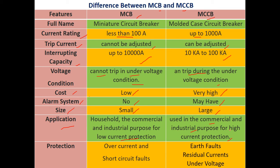In terms of protection, MCB protects against overcurrent and short circuit faults. MCCB also provides protection against overcurrent and short circuit; however, we prefer MCCB because it additionally protects against earth faults, residual currents, and under-voltage conditions, which are not offered by the MCB.